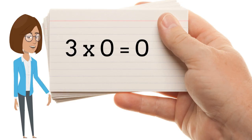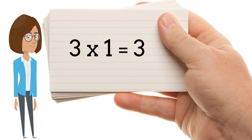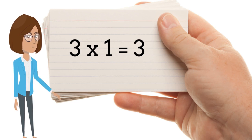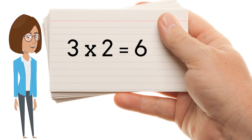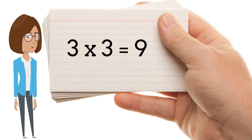3 x 0 is 0. 3 x 1 is 3. 3 x 2 is 6. 3 x 3 is 9.